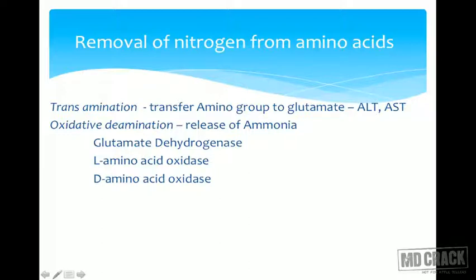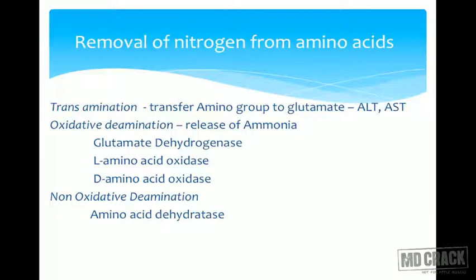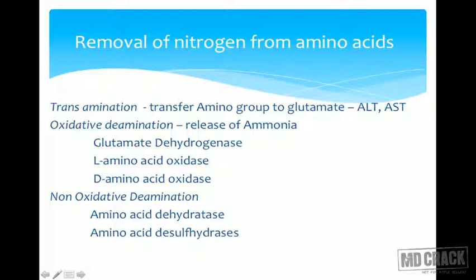Since we've discussed oxidative deamination, there is also a mechanism called non-oxidative deamination. The body can release ammonia without oxidizing, through enzymes called amino acid dehydratases. These special enzymes remove water and help liberate ammonia. A classic example is serine or cysteine converting to pyruvate. From an MCQ perspective, amino acid dehydratases are also called amino acid desulfhydrases, meaning sulfur is also removed — especially important in sulfur-containing amino acid metabolism.